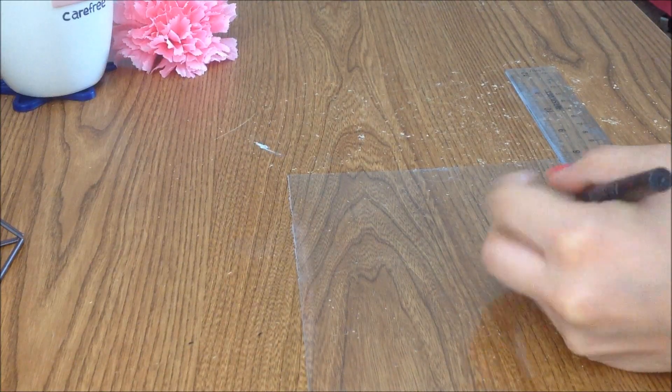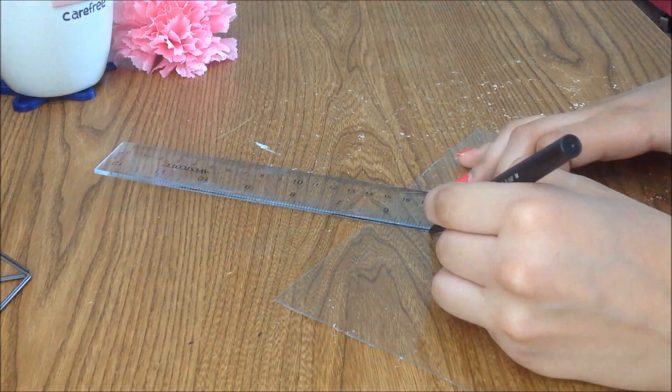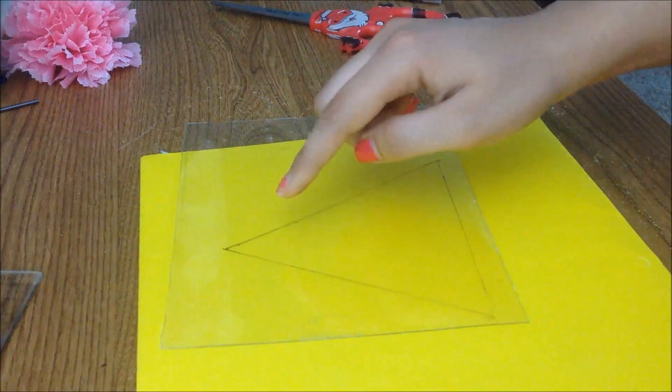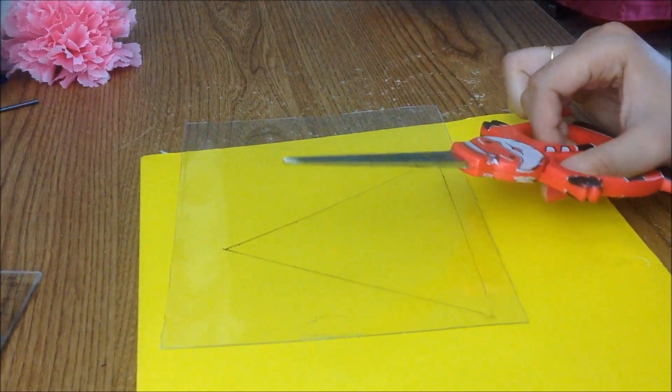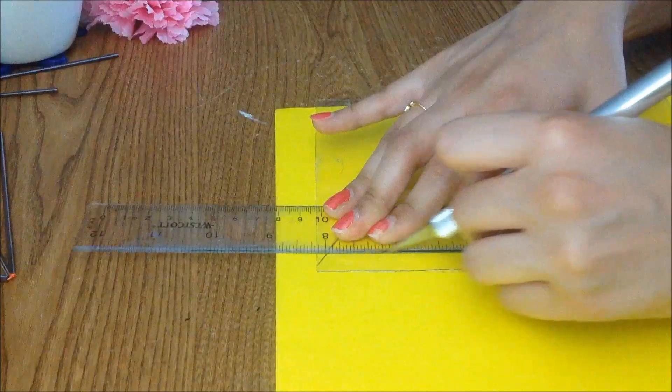After cutting out my plastic sheet, I'm gonna measure out an equilateral triangle of five inches. Now you can always cut out your plastic triangle using scissors, but an exacto knife is much more precise and a whole lot easier.